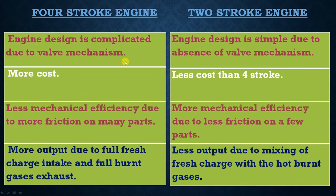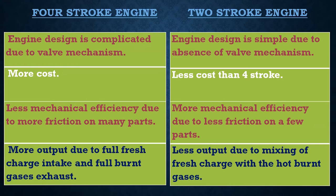Coming to mechanical efficiency, the mechanical efficiency of a four stroke engine is less, obviously due to the presence of the valve mechanism. Because in the valve mechanism there are comparatively many engine parts involved, which reduces mechanical efficiency. Whereas in a two stroke engine, due to the absence of valve mechanism and presence of port mechanism, the efficiency is higher — less friction is produced in the two stroke engine.